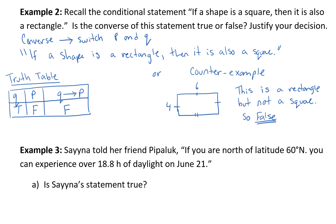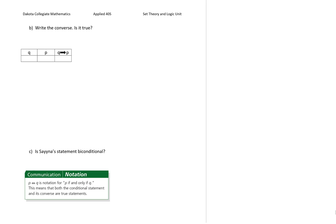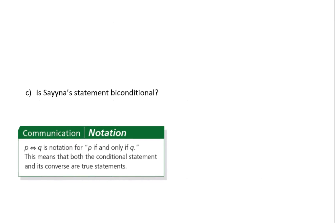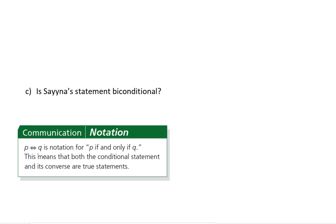This is a rectangle, but not a square, so false. You need to have some sort of statement that goes along with your counterexample in most instances. At the bottom of example three, there's some notation: P double arrow Q — that's the notation for P if and only if Q. This means that both the conditional statement and the converse are true statements, or bi-conditional.